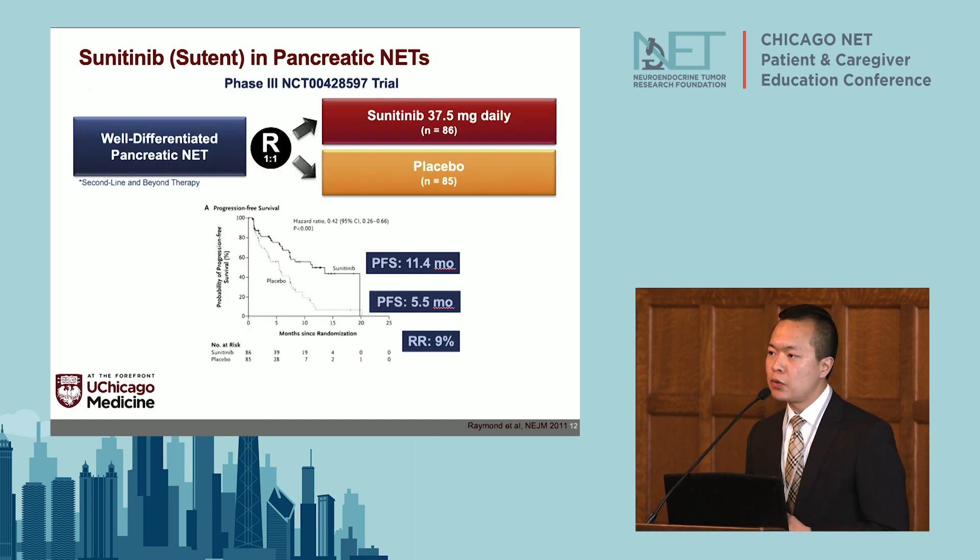Sunitinib was approved for treatment of pancreatic neuroendocrine tumors based on a Phase III clinical trial. These were patients previously treated with a somatostatin analog such as octreotide or lanreotide whose tumors had progressed on those treatments. Patients were randomized to receive sunitinib versus placebo, and treatment with sunitinib more than doubled the progression-free survival. The response rate was 9%, meaning this is again a treatment that keeps the tumor stable rather than causing significant tumor shrinkage.